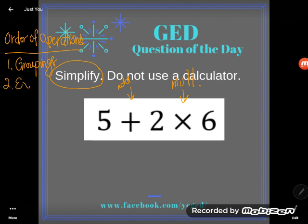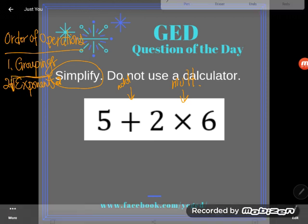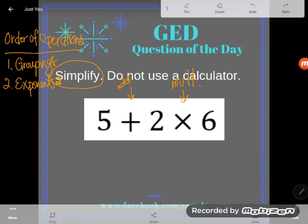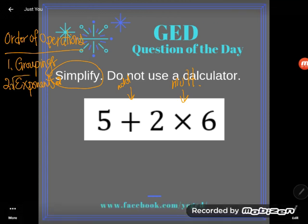Second step is to do exponents. Again exponents, none in this problem because exponents are those little floating numbers, the powers and their inverses, the roots or radicals. Sorry that's messy. I was trying to draw a little check mark house. Let's try that one more time. Radicals.